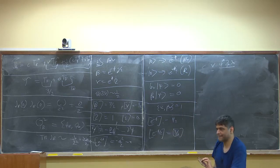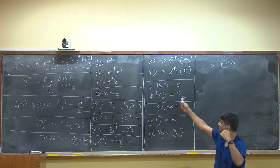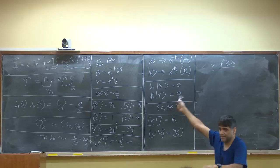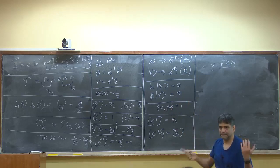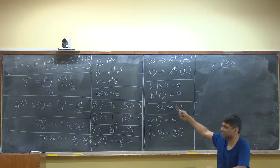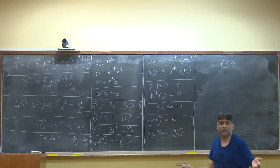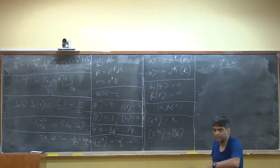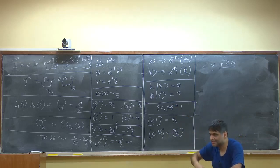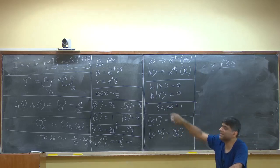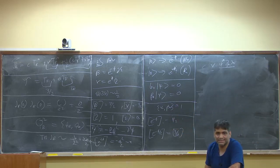The structure of this BRST current dictates many otherwise seemingly arbitrary choices in what we've done. Of course, these choices wouldn't have been arbitrary if you started with the supergravity action and tried to fix it. But the structure of this BRST current is the thing that remembers all of that and forces you to do the right thing.